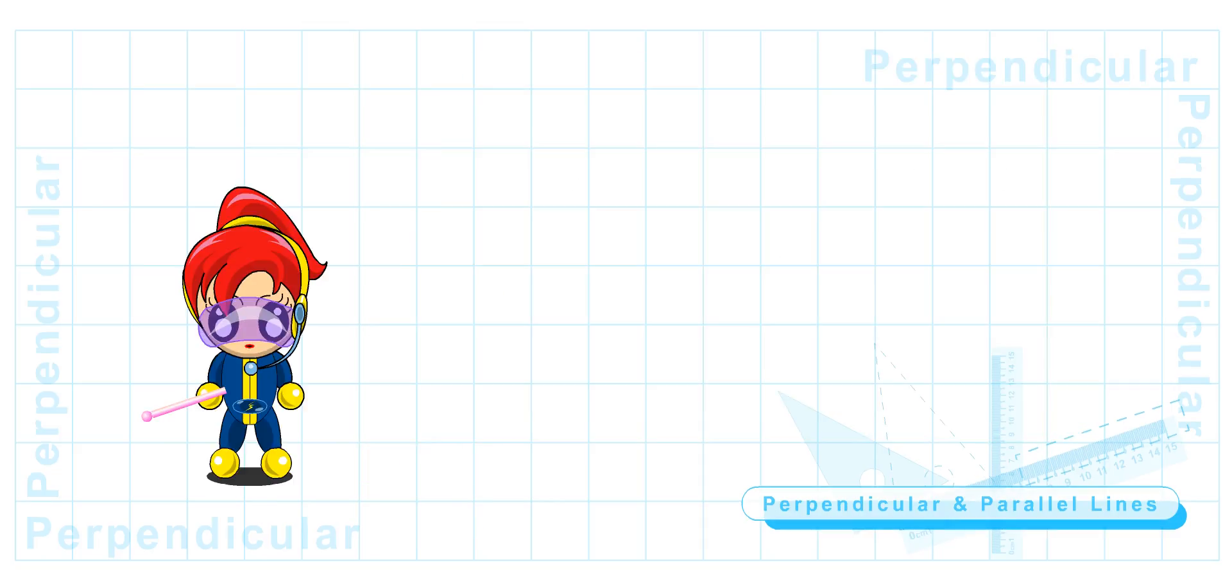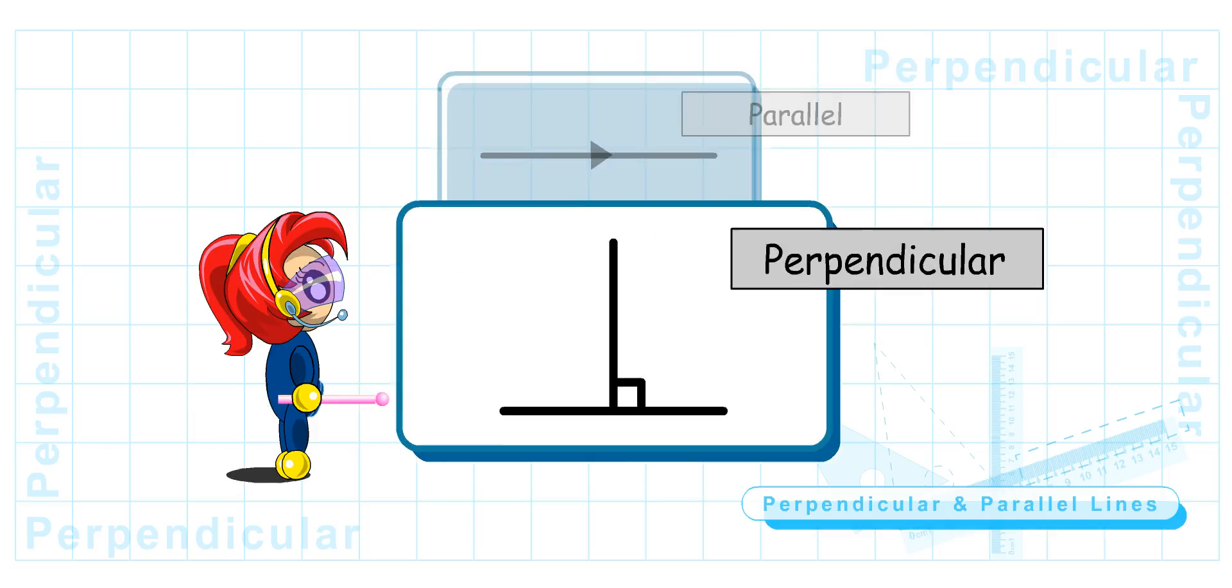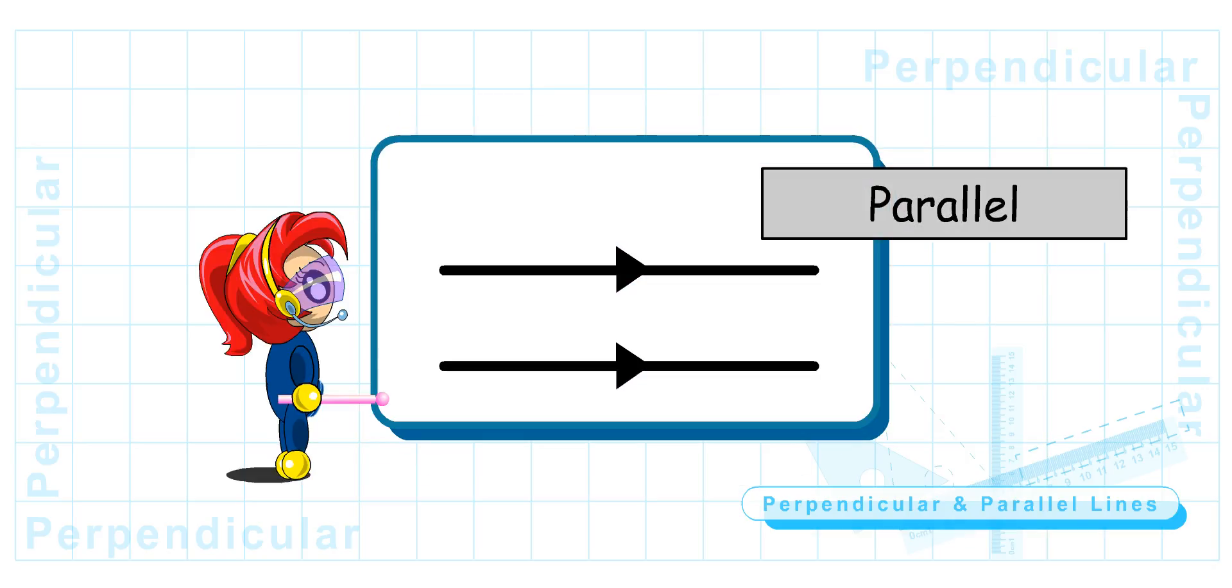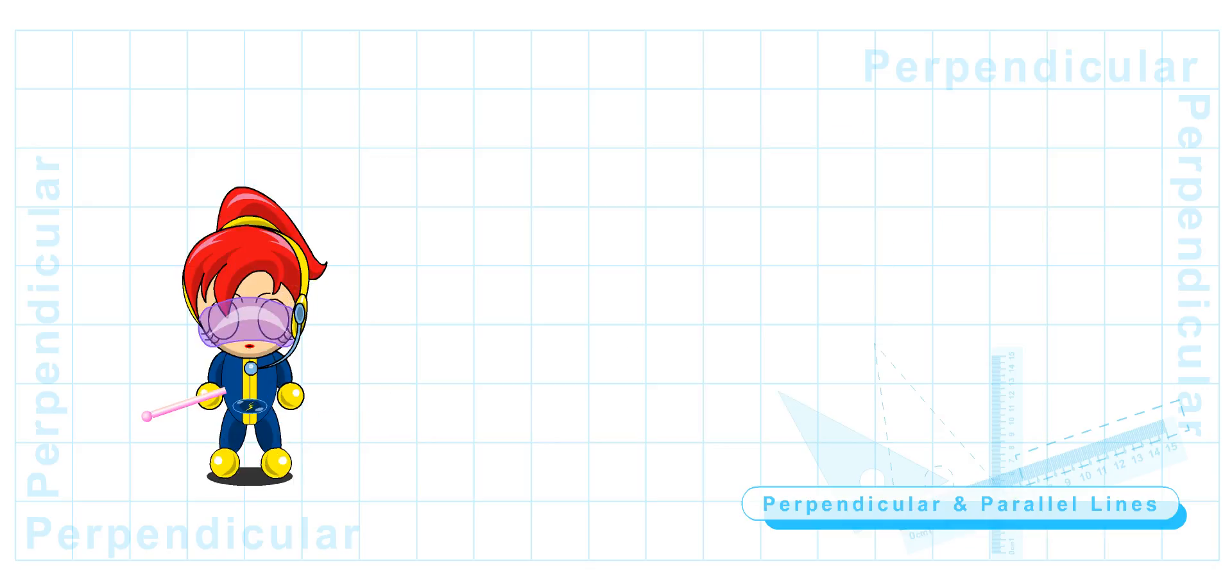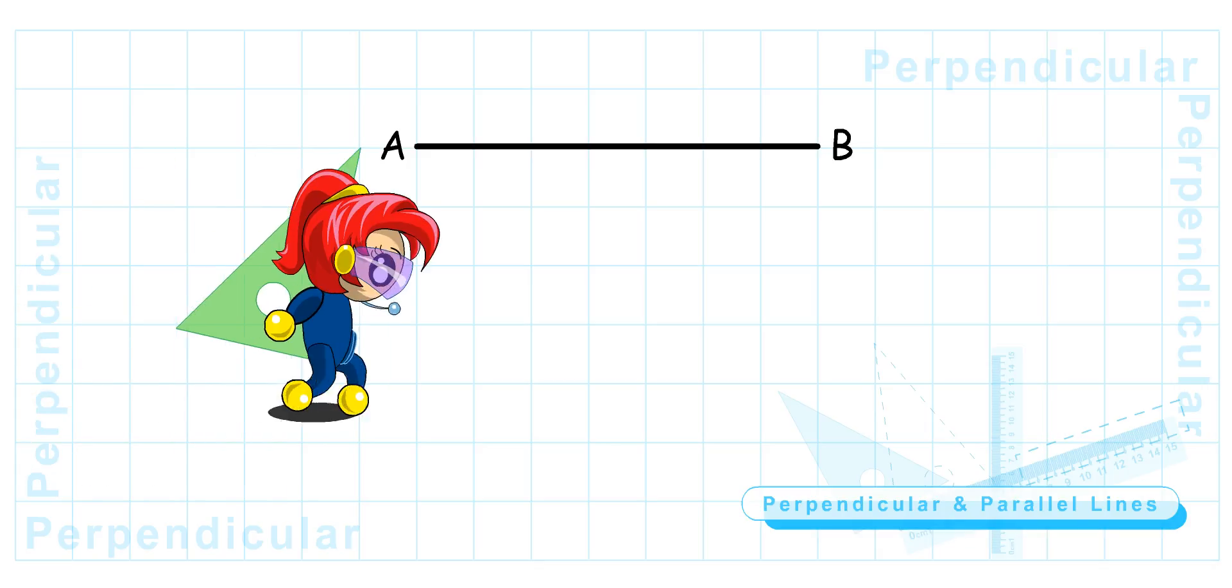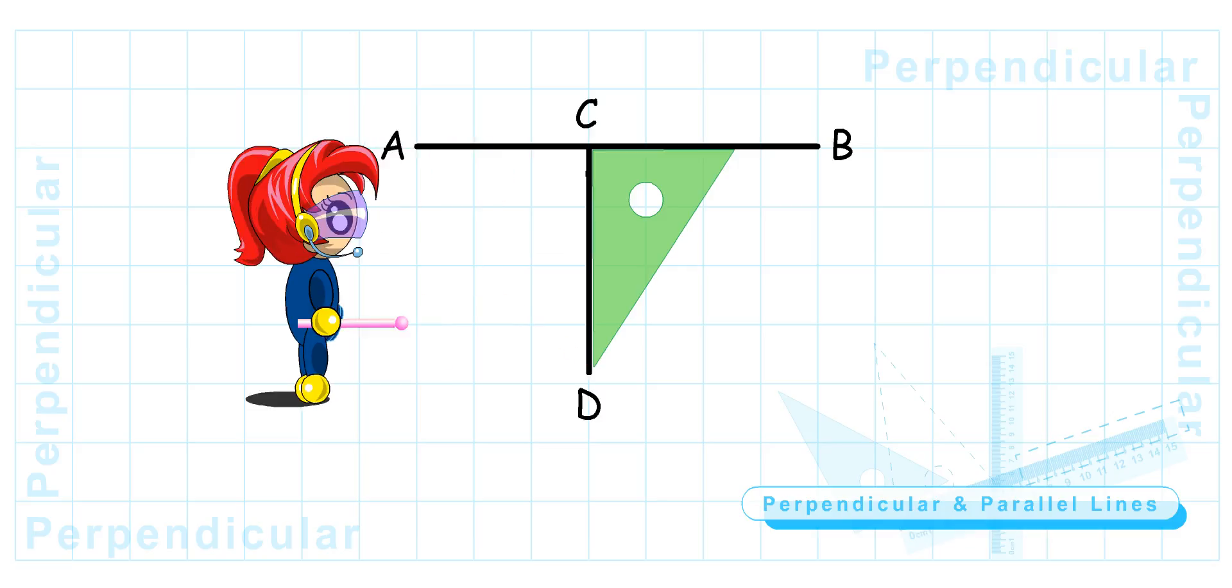What have you learnt today? I have learnt how to identify perpendicular and parallel lines. Perpendicular lines will form a right angle where they meet, while parallel lines are lines that will never meet. Very good. How do you draw them? Well, to draw perpendicular lines, I need to use a set square. I have to place my set square on the given line and draw another line along the adjacent side of the set square, such that these two lines meet to form a right angle.